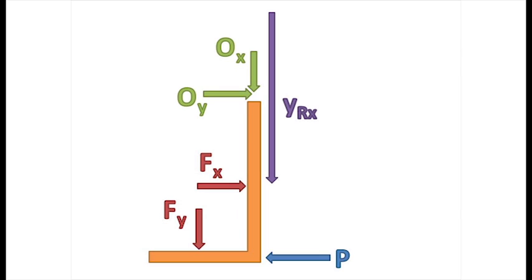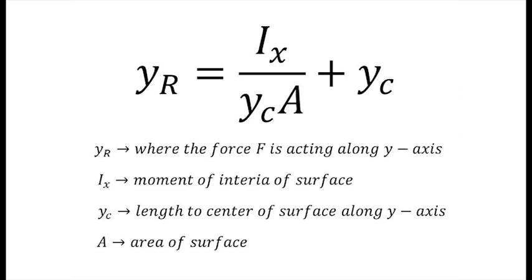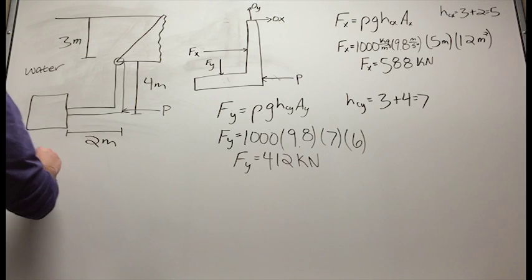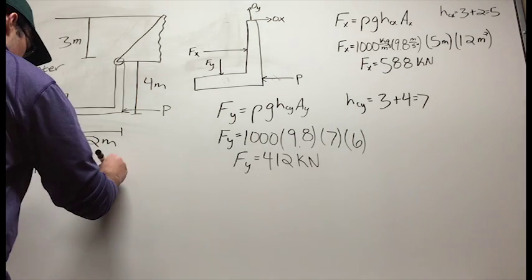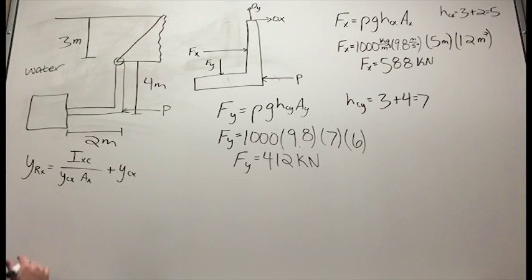The next step is to find where F_X is acting. This is done by using the following equation, where I_xC is the moment of inertia of the gate, Y_cX is the same value as H_cX found earlier, and A_X is the area of the vertical portion of the gate.